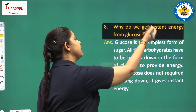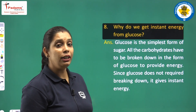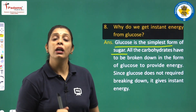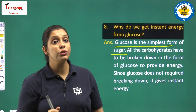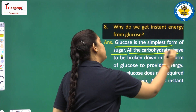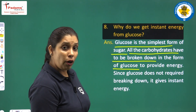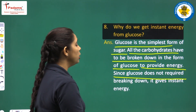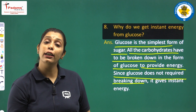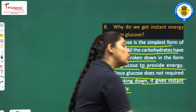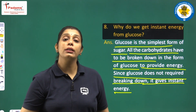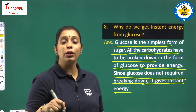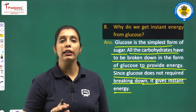Next question: why do we get instant energy from glucose? Glucose is the simplest form of sugar. All carbohydrates have to be broken down into the form of glucose to provide energy. Since glucose does not require further breaking down, it gives instant energy. Glucose ko aage break honi ki zarurat nahi hai, isliye glucose aapki body ko instant energy deti hai. In summers when it is very hot, people drink glucose-based drinks and feel energetic right away.